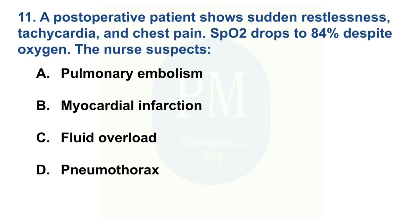A post-operative patient shows sudden restlessness, tachycardia and chest pain; SpO2 drops to 84% despite oxygen. The nurse suspects: Option A: Pulmonary embolism. Option B: Myocardial infarction. Option C: Fluid overload. Option D: Pneumothorax. The correct option is Option A — Pulmonary embolism.